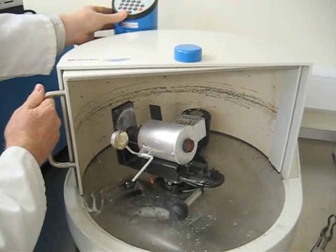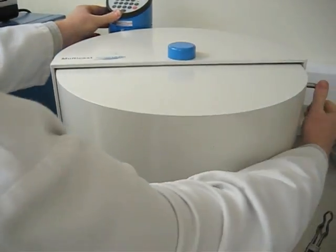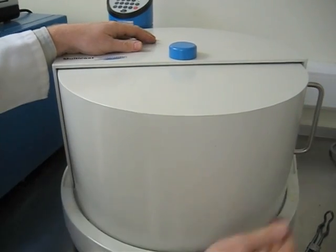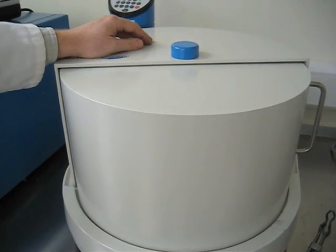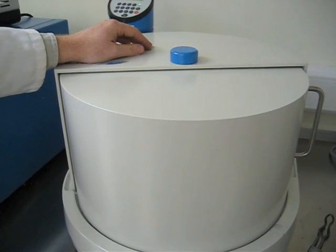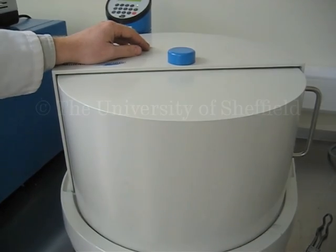And then you shut the door. There's a micro switch on the door and you can see the machine virtually leaps off the desk. Off it goes. Spins around. Centrifugal force pushes the metal into the mould. For a number of minutes. About three minutes. Job done. Excellent.